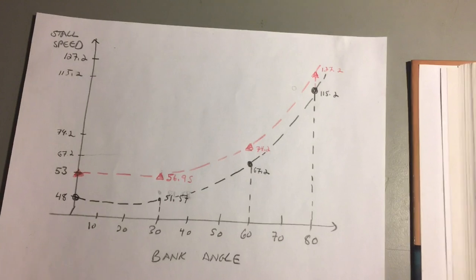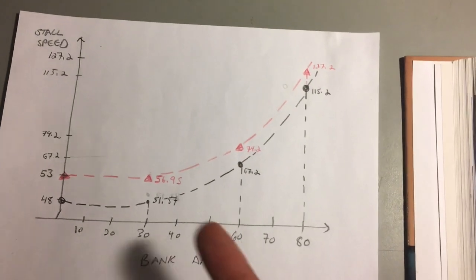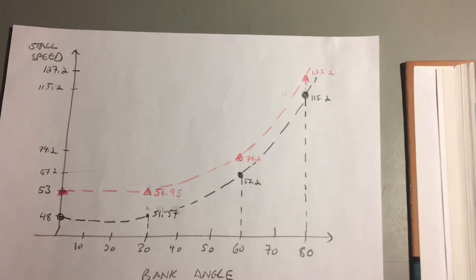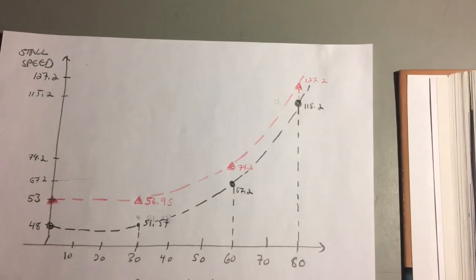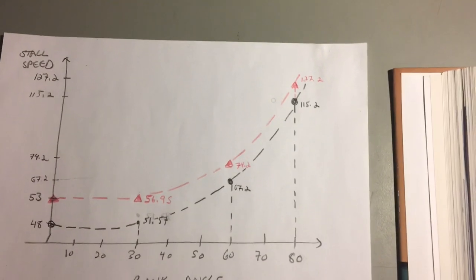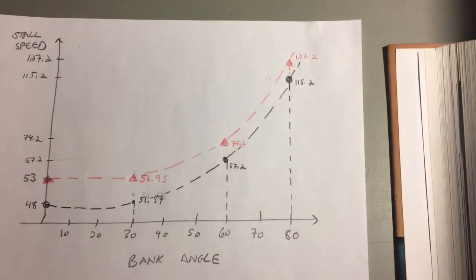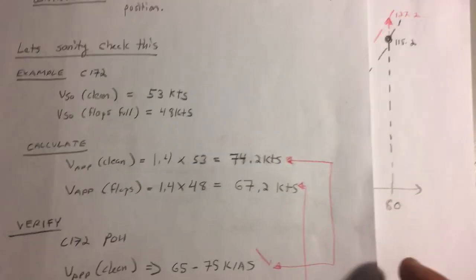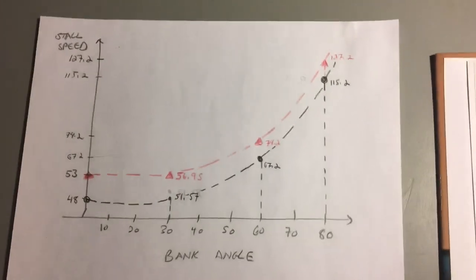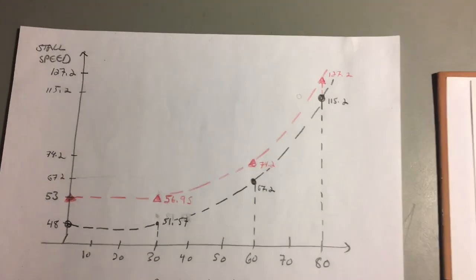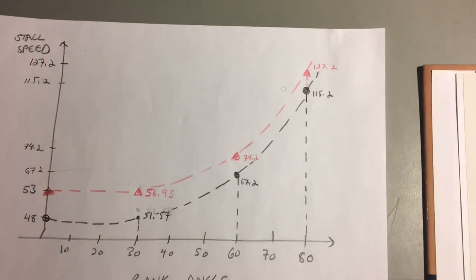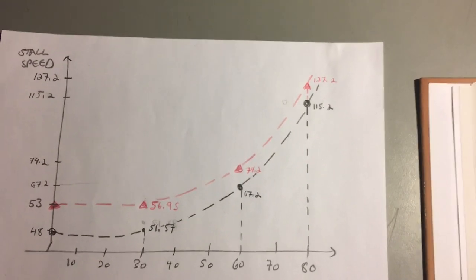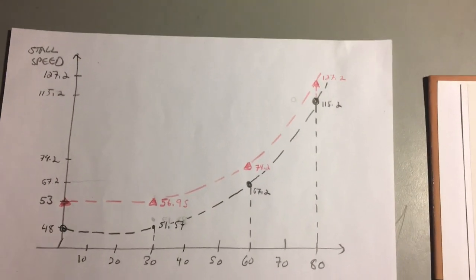What this tells us is at 60 degrees of bank angle the stall speed is going to be 67.2 and 74.2 knots indicated airspeed, which is the same value as we calculated here. Furthermore we can see that at 80 degrees of bank angle the stall speed would be at 115.2 knots and 127.2 knots.